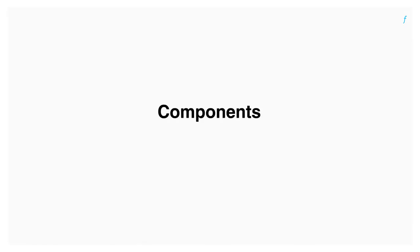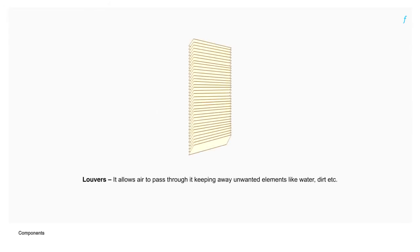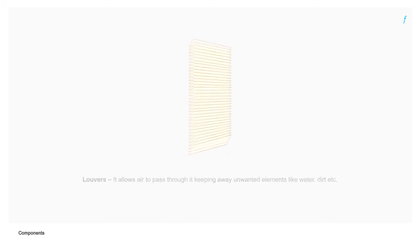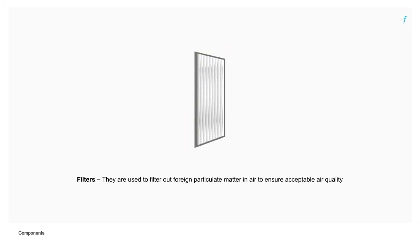Let's now have a look at the components involved. Louvers allow air to pass through while keeping away unwanted elements like water and dirt. Filters are used to filter out foreign particulate matter in air to ensure acceptable air quality.